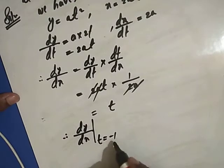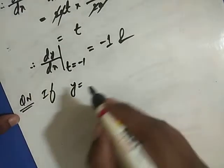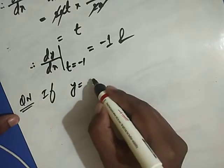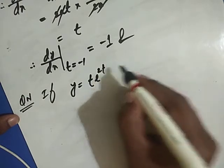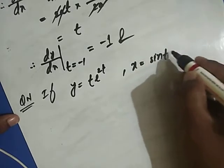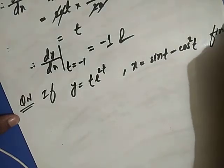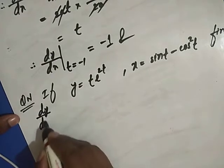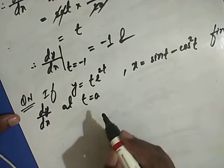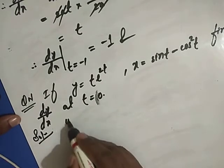So dy/dx at t equals minus 1 gives us the answer minus 1. Next question: If y equals t times e to the power 2t, and x equals sin t minus cos squared t, find dy/dx at t equals 0.